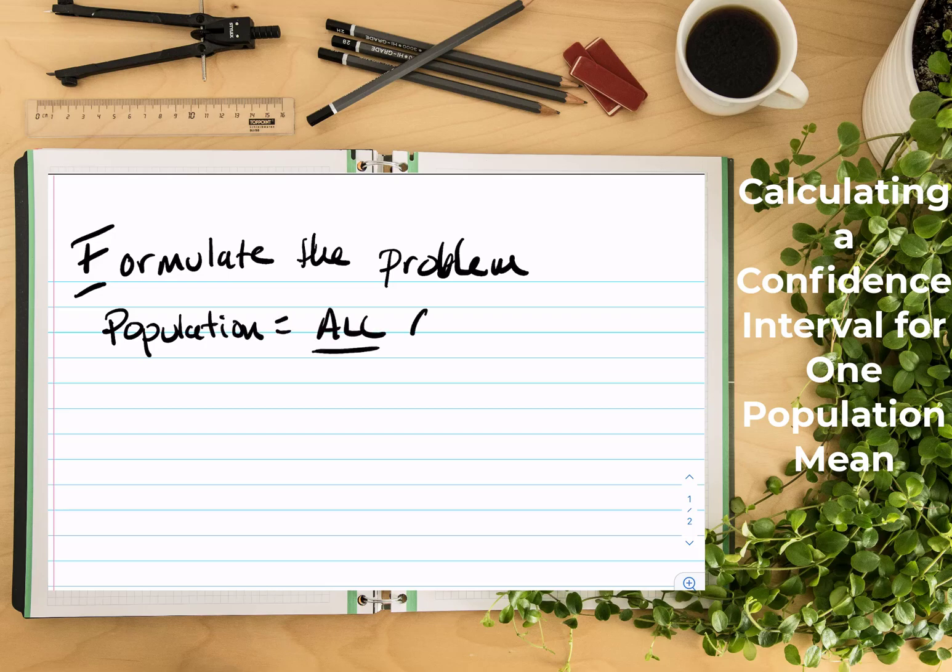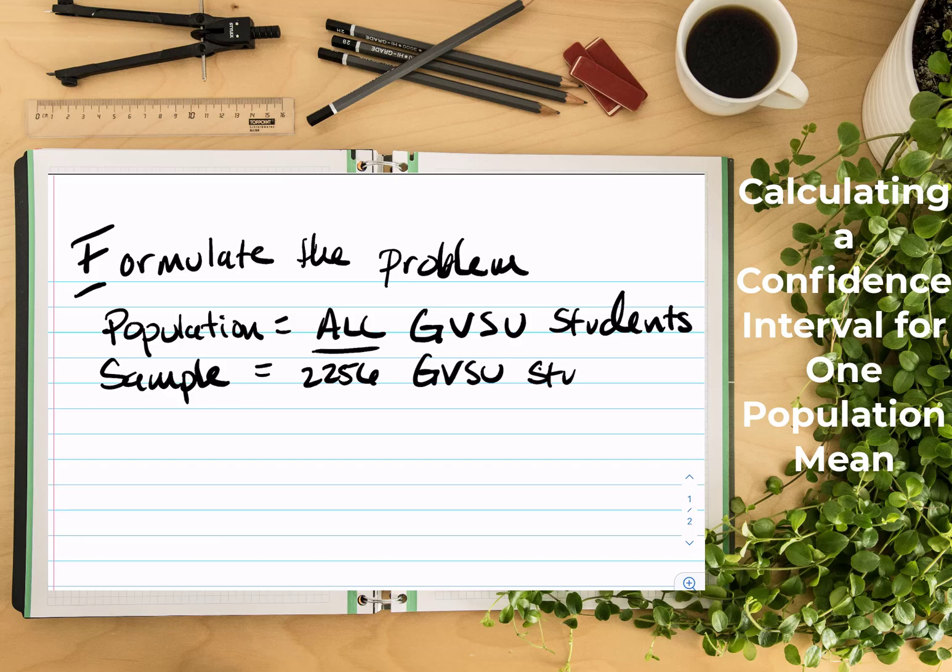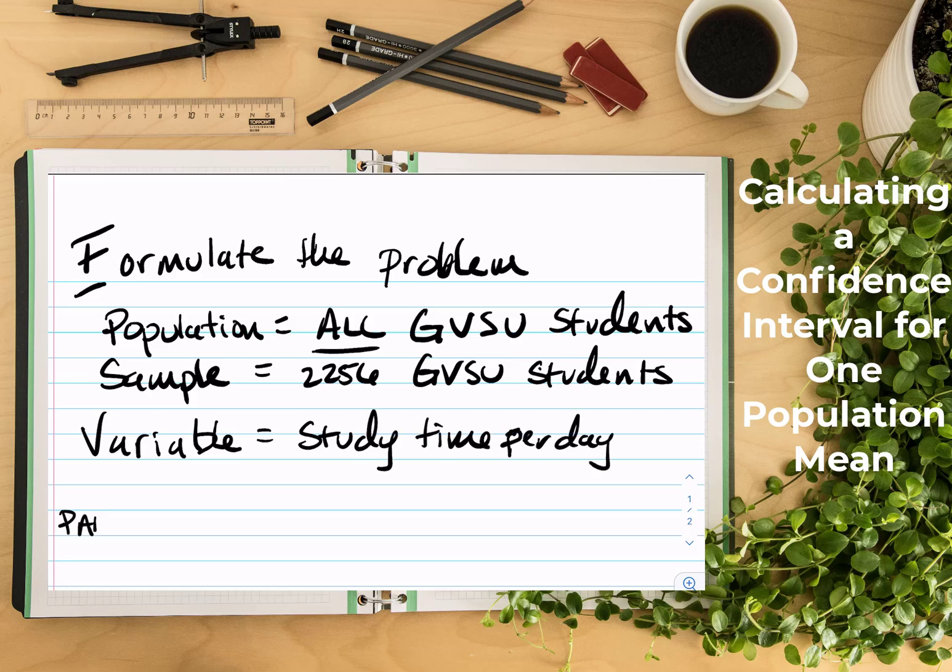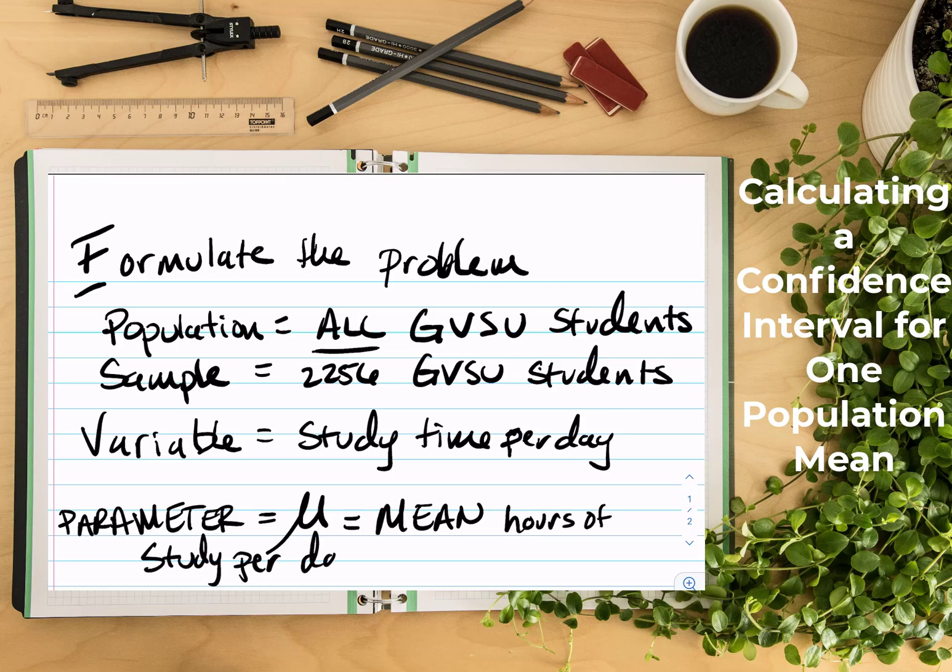Here our population would be all GVSU students, and then the sample is just that smaller group, so the 2,256 GVSU students. Remember that from population to sample it's the same type of people, it's just one is the all and one is the small. Then we have our variable, which is study time per day, and then our parameter is going to be μ because we're doing a population mean. And it always starts with mean, and here our variable is hours of study per day, and then we would state for our population, which is GVSU students.